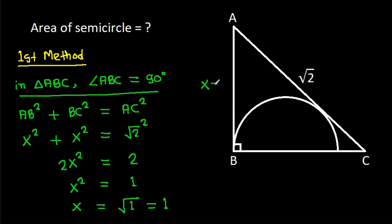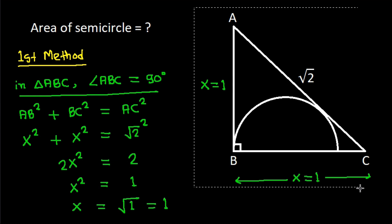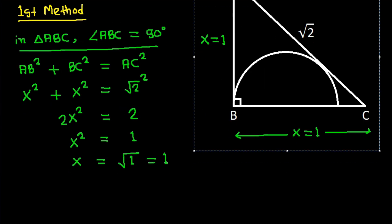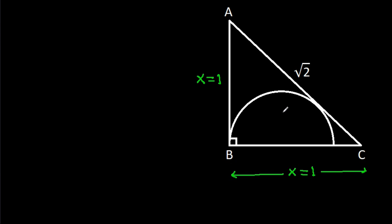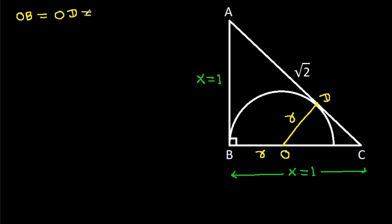So we have AB equals x, that is 1, and BC equals x, that is 1. Now suppose the center of the semicircle is O, and suppose this point is D. Then OB is the radius and OD is the radius, so OB equals OD equals radius, suppose r.